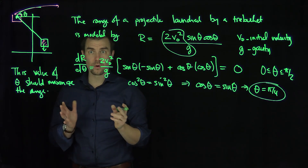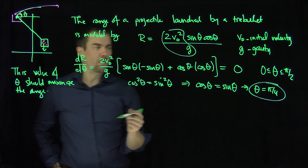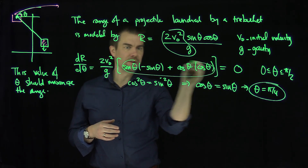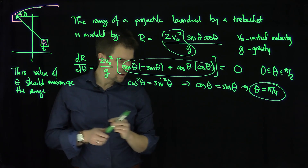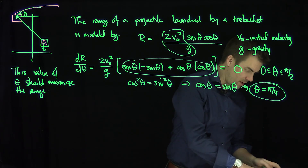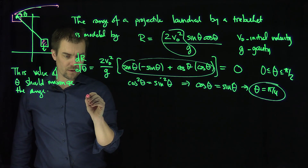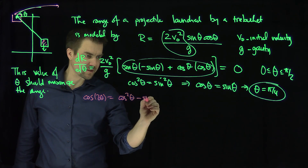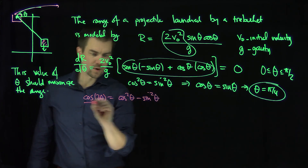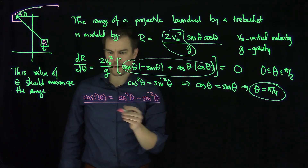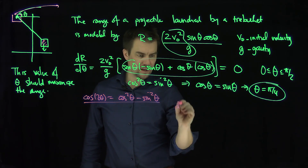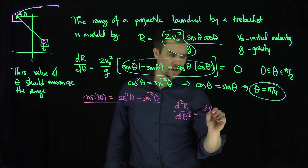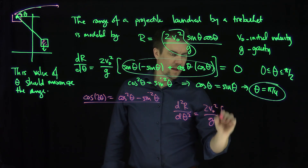Let's check that this is actually a local maximum. We'll take the second derivative. I'll use trigonometric properties: cosine squared minus sine squared equals cosine of 2θ. From trigonometry, cosine of 2θ equals cosine squared of theta minus sine squared of theta, so I'll use the double angle identity. This tells me how to take the second derivative — d²r/dθ².